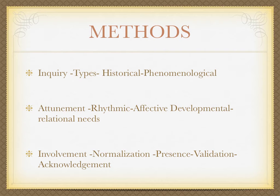These methods are used to come alongside the Child and Parent parts of the client. Inquiry is really asking questions, and there are two particular types: historical questions — how and why is this, how does the past affect the present — and phenomenological questions, more like: how do you feel about that? How does that affect that? Attunement is coming alongside the client, paying attention to their different rhythms, their different developmental levels, and their relational needs. Another method is involvement, in terms of normalisation, and validation and acknowledgement.